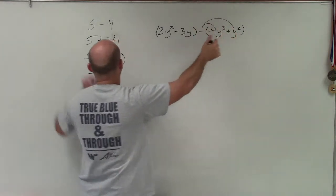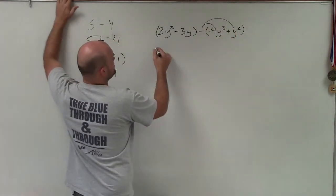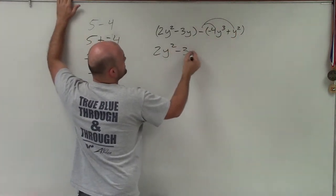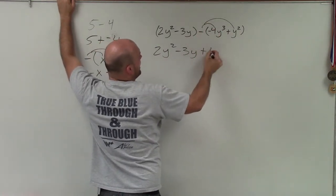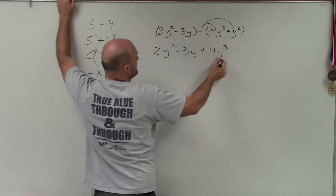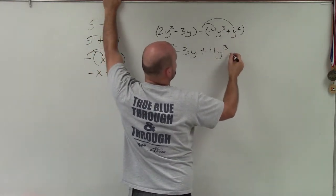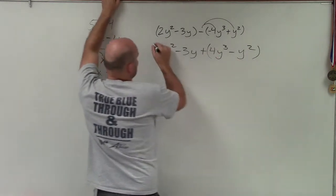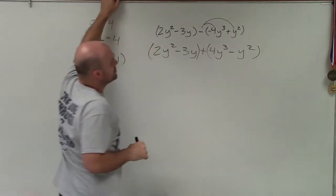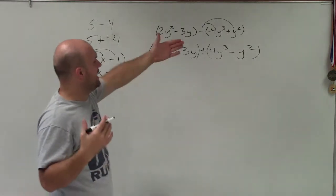So when I apply the distributive property, I can rewrite it now as an addition problem. I have 2y squared minus 3y. Distribute: negative times negative 4y cubed is now positive 4y cubed. And then negative times y squared is going to be minus y squared. So what I'm doing now is I changed it to an addition problem, and I'm adding.